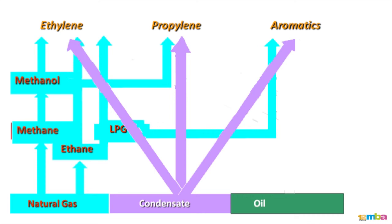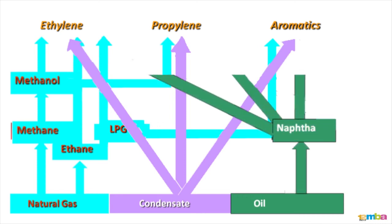On the oil side, oil is first refined in a refinery and you get naphtha. Naphtha then gets converted to ethylene, propylene, and aromatics.